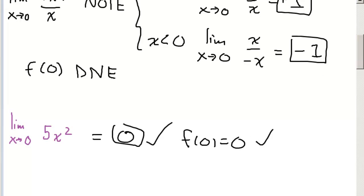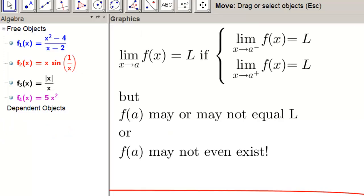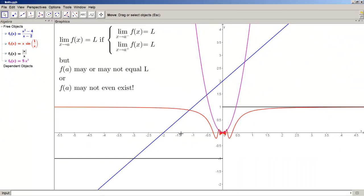The key here, and we'll go back to this picture, is that in single variable calculus, we can approach from the left and we can approach from the right. And that's all we can really do because we're limited to the x-axis only.